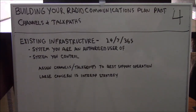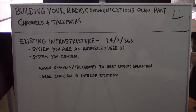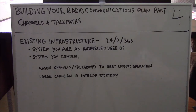Existing infrastructure means a system that's up and running 24-7-365, like the cellular telephone network — one that you're an authorized user of, in the chain of command to reallocate resources, or have complete and total control over. In that case, you simply assign channels or talk groups to best support your operation. The large concern is interop strategy — how are we going to take people from outside our system and integrate them?